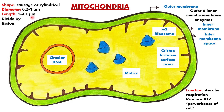Let's talk about the structure of mitochondria. The mitochondria is double membrane bound — one is the outer membrane and the second is the inner membrane. These outer and inner membranes divide its lumen into two aqueous compartments: the outer compartment and the inner compartment. The inner compartment is called the matrix.